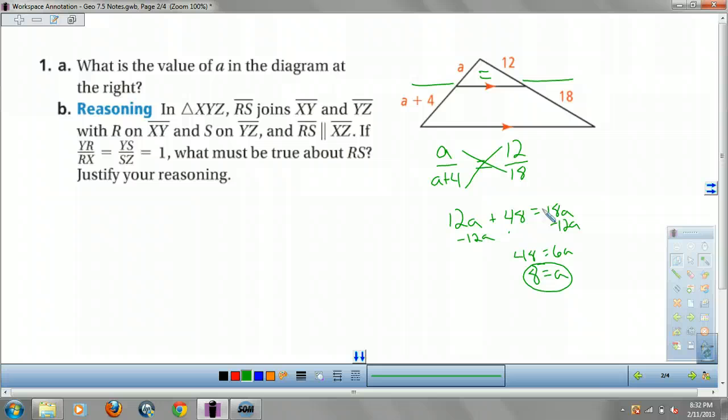So, in triangle XYZ, RS joins XY and YZ. With R on XY, and S on YZ, and RS equals XZ, if YR over RX equals YS over SZ equals 1, what must be true about RS? Ready, guys? It's going to be tricky.